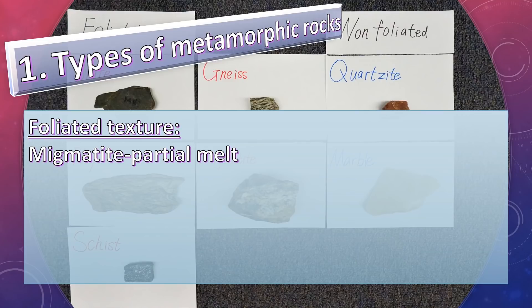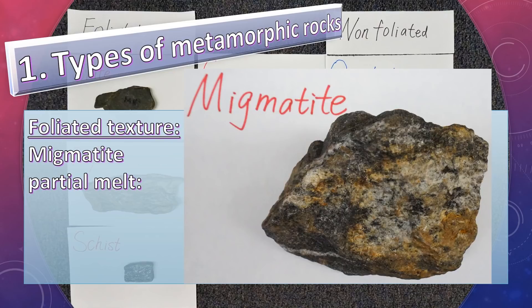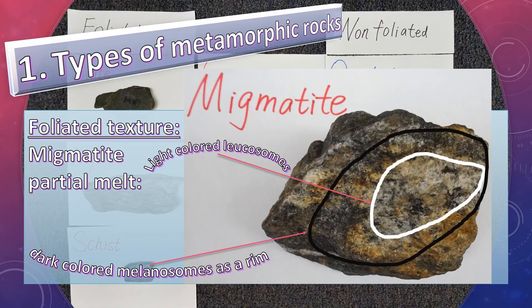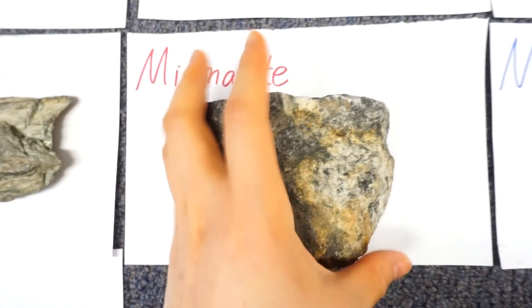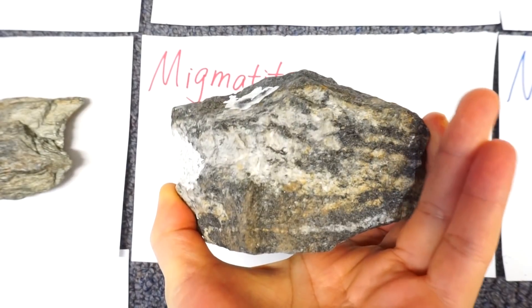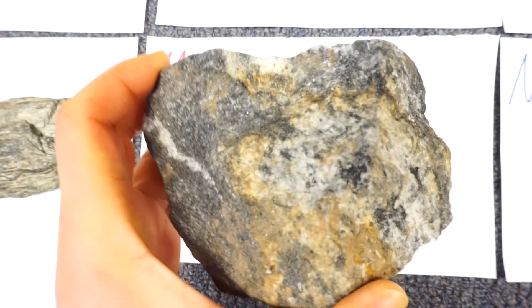If it has partial melt, then the sample is migmatite. Migmatite means melting of the light-colored minerals, which are quartz and feldspar. This is a sample of migmatite. You can see the light-colored leucosome and dark-colored minerals as a ring around the light-colored minerals.